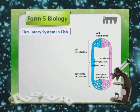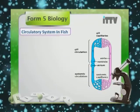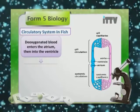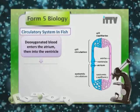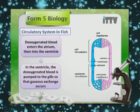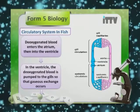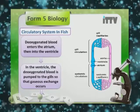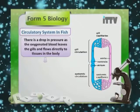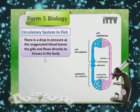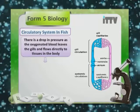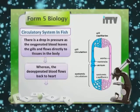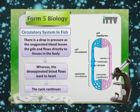Fish has a single closed circulatory system, which means that blood flows through the heart only once in a complete cycle. Deoxygenated blood enters the atrium followed by into the ventricle. In the ventricle, the deoxygenated blood is pumped to the gills so that gaseous exchange occurs. There is a drop in pressure in the gills as the oxygenated blood leaves and flows directly to tissues in the body, while the deoxygenated blood flows back to the heart and the cycle continues.